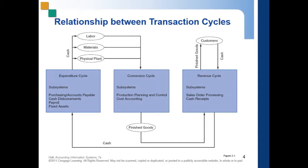A separate subsystem of the cycle processes each component. The major subsystems of the expenditure cycle include the purchases or accounts payable system, which recognizes the need to acquire physical inventory such as raw materials and places an order with the vendor. When the goods are received, the purchases system records the inventory by increasing inventory and establishing an accounts payable.